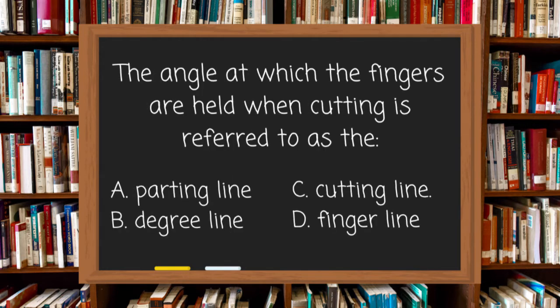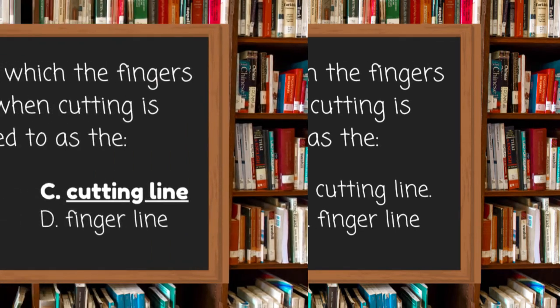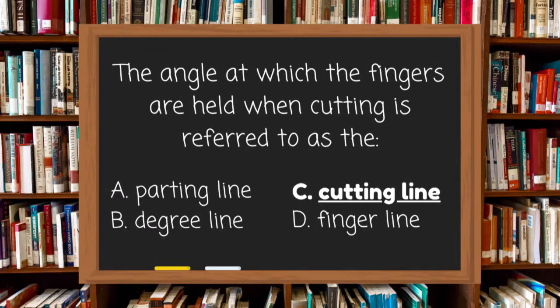The angle at which the fingers are held when cutting is referred to as the: A. Parting line, B. Degree line, C. Cutting line, or D. Finger line. The answer is C, cutting line.